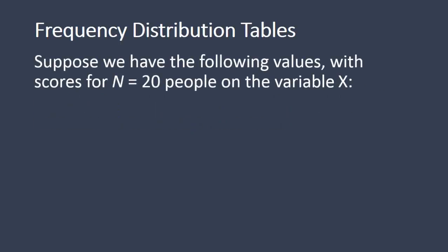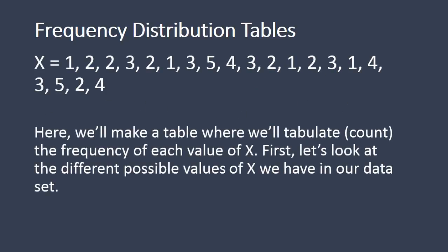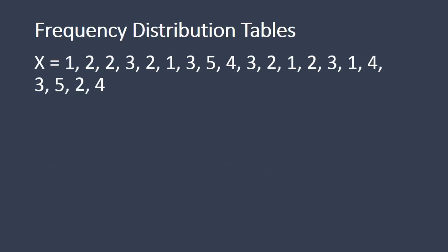Suppose we have the following values with scores for 20 people on the variable X as you see here. Here we'll make a table where we'll tabulate or count the frequency of each value of X. First let's look at the different possible values of X that we have in our data set.